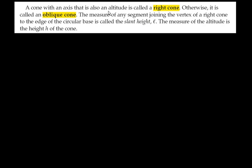A cone with an axis that is also an altitude is called a right cone. Otherwise, it's called an oblique cone. The measure of any segment joining the vertex of a cone to the edge of the circular base is called slant height, ℓ. The measure of the altitude is the height, h, of the cone.